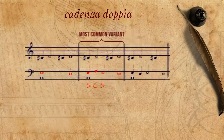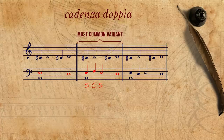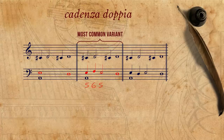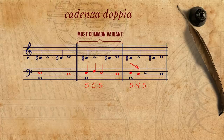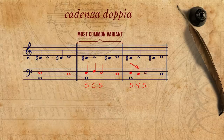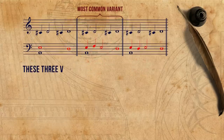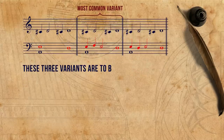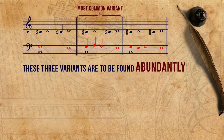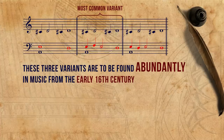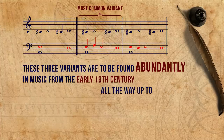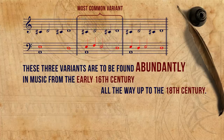A slightly less common variant, but equally legitimate, is for the tenoritzans to descend to the 4th instead. These three variants are to be found abundantly in music from the early 16th century all the way up to the 18th century.